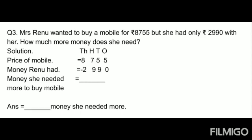Write down the first statement: price of mobile is Rs. 8,755. Money Renu had is Rs. 2,990. And the money Renu needed more to buy the mobile — you will subtract the money she had from the price of the mobile and you will get the answer. After subtracting, that is the money she needed more.